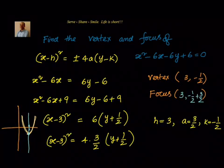That means it will be more positive value. So that is nothing but (3, 1). So focus is at (3, 1) and the vertex is at (3, -1/2).